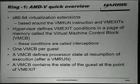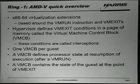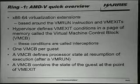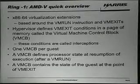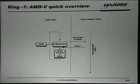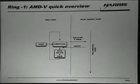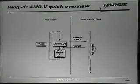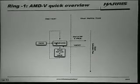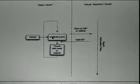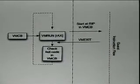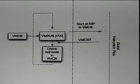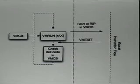The state of that virtual machine is saved inside the virtual machine control block on exit. Looking at the diagram, the VMCB defines what state happens when you call VM run — where do you go in the guest, what happens — all of your state at the time it's invoked.